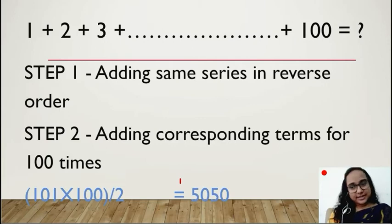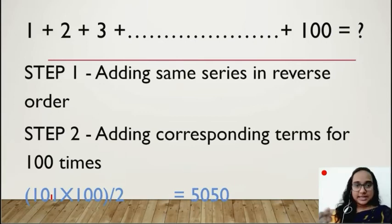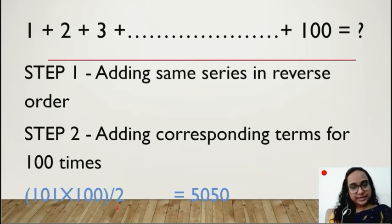Now one more question. In these two things you will see the number of terms. It is 100. In the previous one it was 10. So I had 10 times 11, right? Here it is 100, so it is 100 times 101. What does this mean? Number of terms plus 1, I multiplied it by number of terms. And after that I divided it by 2. Right? So that thing is done here.